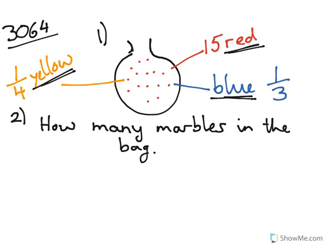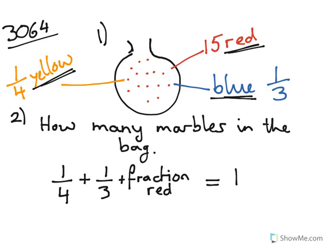The third thing we need to do is that a quarter plus a third plus the fraction of red, and this is what we don't know yet. We don't know what the number of red is as a fraction, must equal one whole. That's the whole bag of marbles.